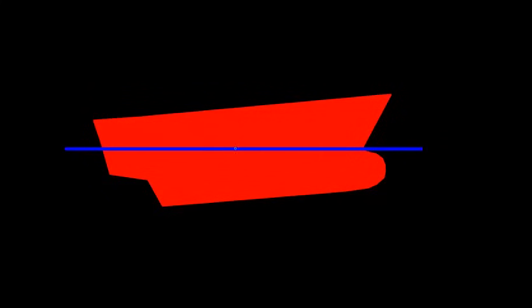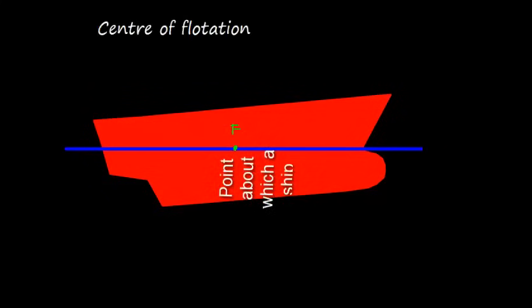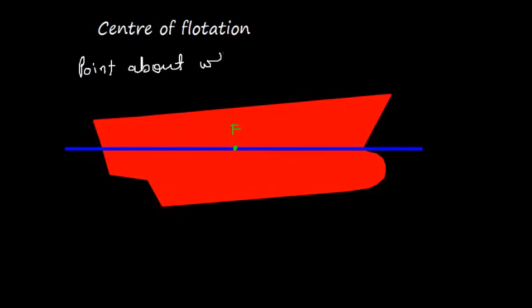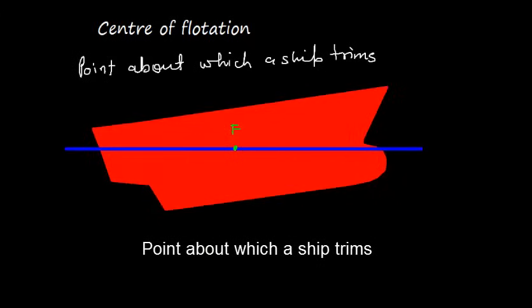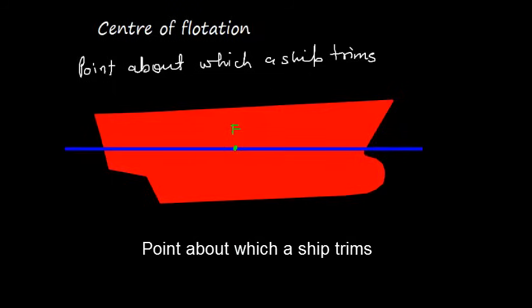Now let us look at this vessel — she is trimming about some point. This point is nothing but the center of flotation, written as F. This is the point about which a ship trims. It is a sort of pivot point and the ship is going to trim about this point.